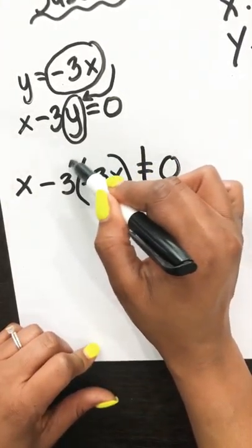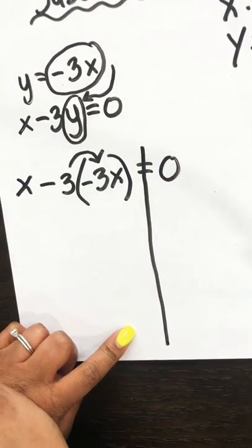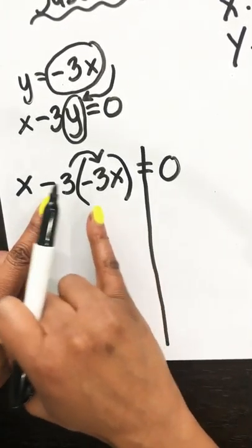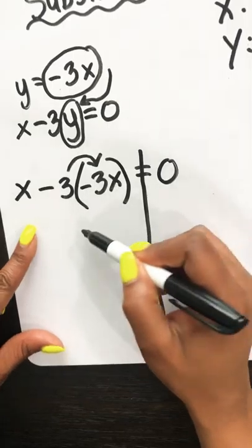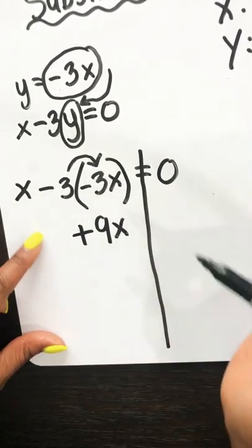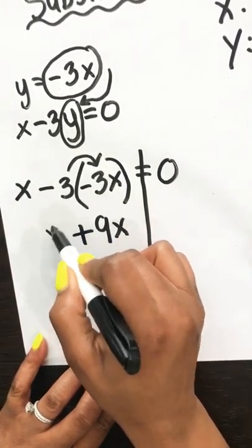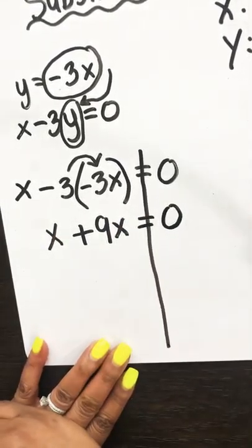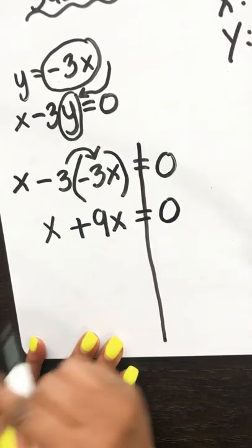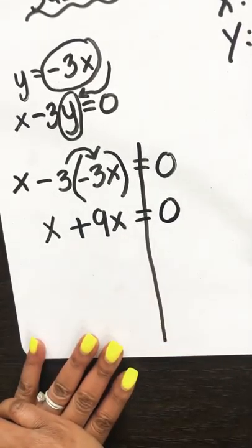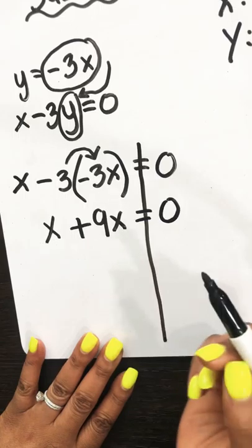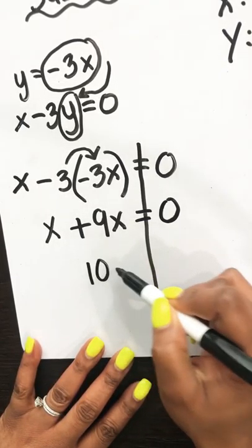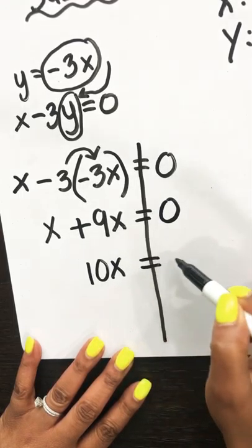The first thing I want to do is multiply negative 3 times negative 3x. Because we are doing negative times a negative, that becomes positive 9x. Then we bring our x down and complete the rest of the equation. At this point we have like terms, so 9x plus x gives us 10x equals 0.